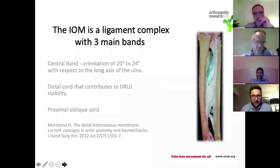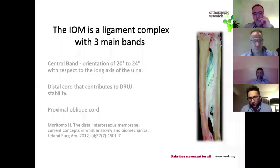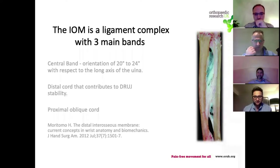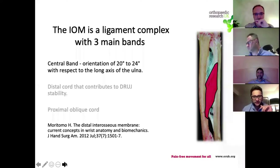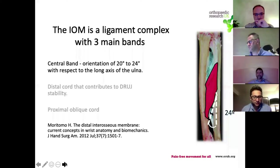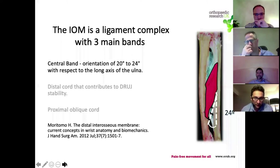The intraosseous membrane is actually a ligament complex, not a single structure. Looking at a specimen with the forearm muscles removed, the ligament complex has three bands. The first and most important is the central band. It has an oblique pathway running from one bone to the other, oriented at 20 to 24 degrees with respect to the long axis of the ulna. This orientation is significant because methods of fixation or reconstruction of the IOM rely quite significantly on restoring that band and that orientation.